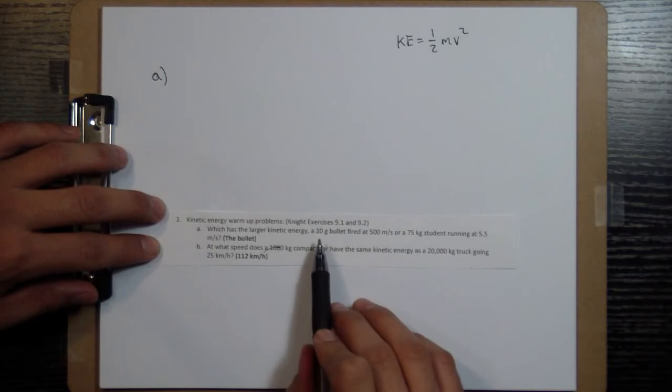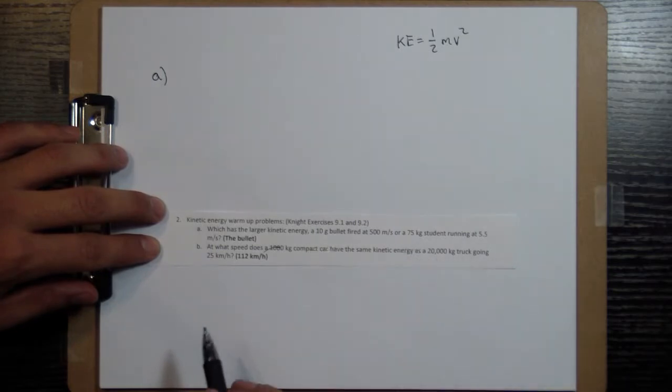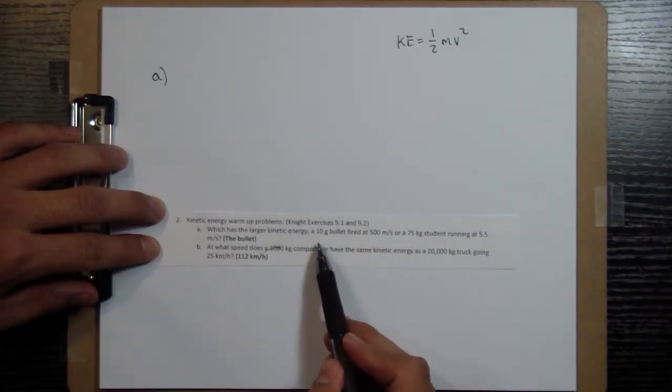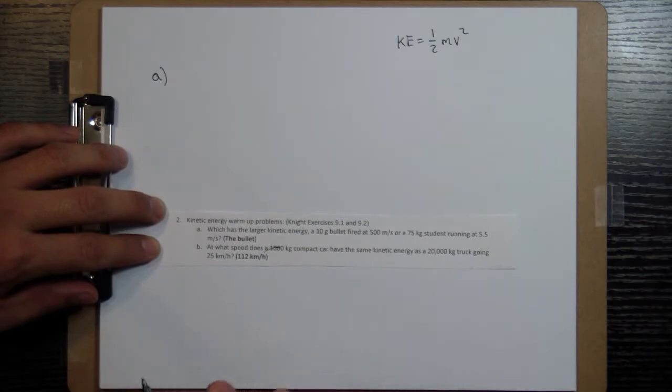But notice that the units here are different, 10 grams and 75 kilograms. So what we need to do is get a consistent set of units, and it's better to convert these grams into kilograms so that we have everything in SI units.